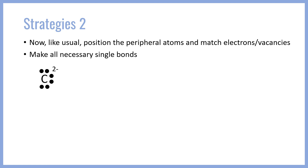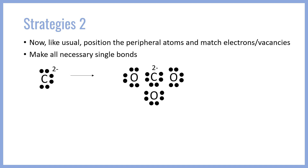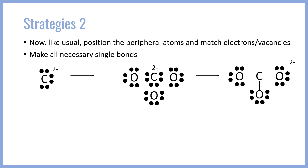We have our C 2- central atom, and we're going to position around it our three oxygens for CO3 2-. We nicely pair up each of the carbon pairs with the vacancy in each of the oxygen octets, and then each of the oxygens will steal that lone pair from the carbon to form a single bond. Each of the oxygens will have a nice octet, whereas the carbon is still electron deficient, and we'll come back to that.